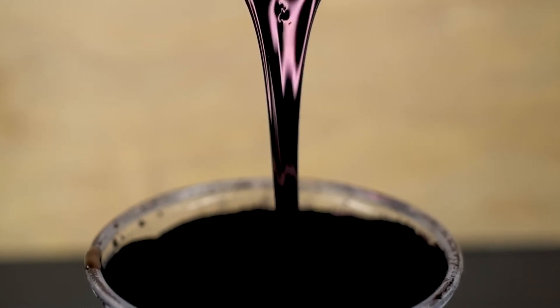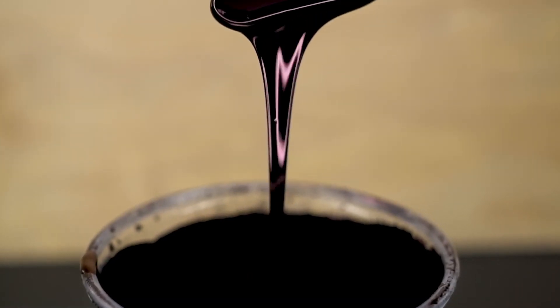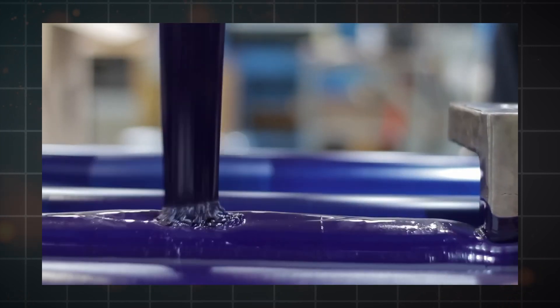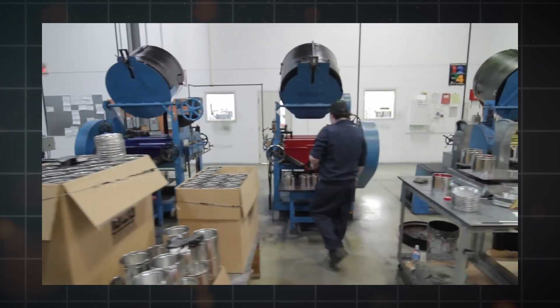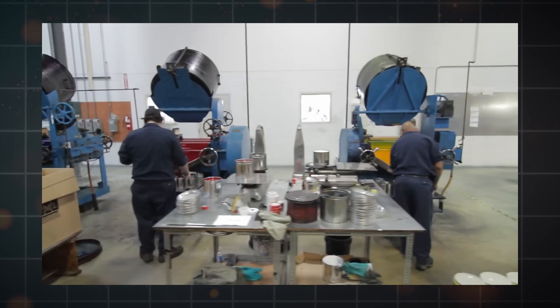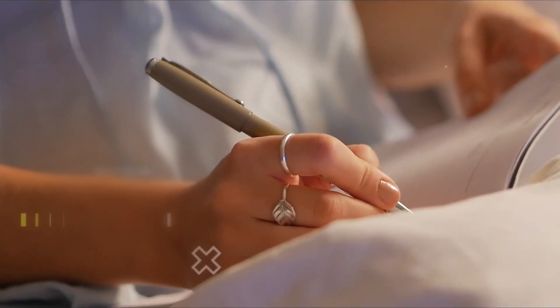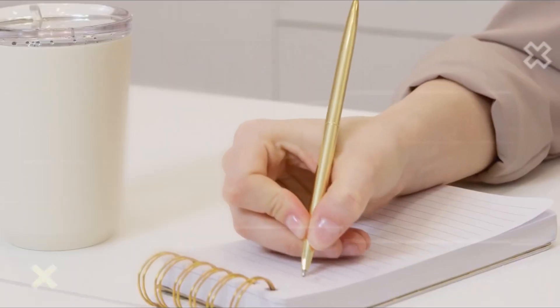Once the right ink formula is found, it is put through a lot of tests to make sure it meets all the color, viscosity, and drying time standards. This quality control is very important because it decides how well the ink works in different writing conditions and how long it lasts on paper.